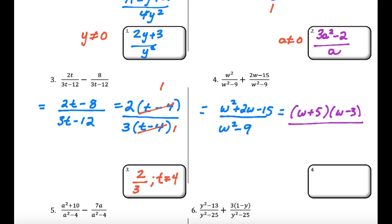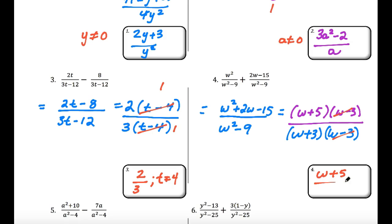The denominator w squared minus 9 is a difference of two squares, so it factors into w plus 3 times w minus 3. The w minus 3 factors cancel, and we're left with w plus 5 over w plus 3. And w cannot be plus or minus 3.